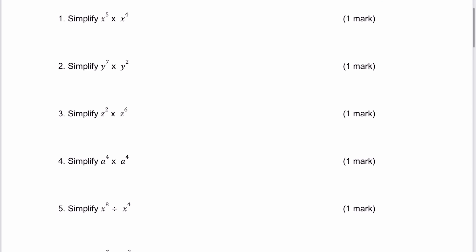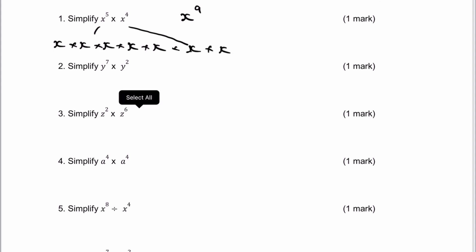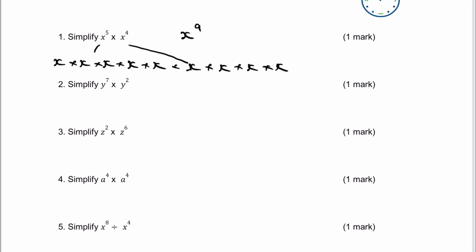The laws of indices: if you've got x to the 5 times x to the 4, what we're doing is adding those indices together. The reason we do that is because this is the same as x times x times x times x times x, times x times x times x times x. Put all of those together and you get x to the 9. We can use that same principle — y to the 7 times y to the 2 is going to be y to the 9.